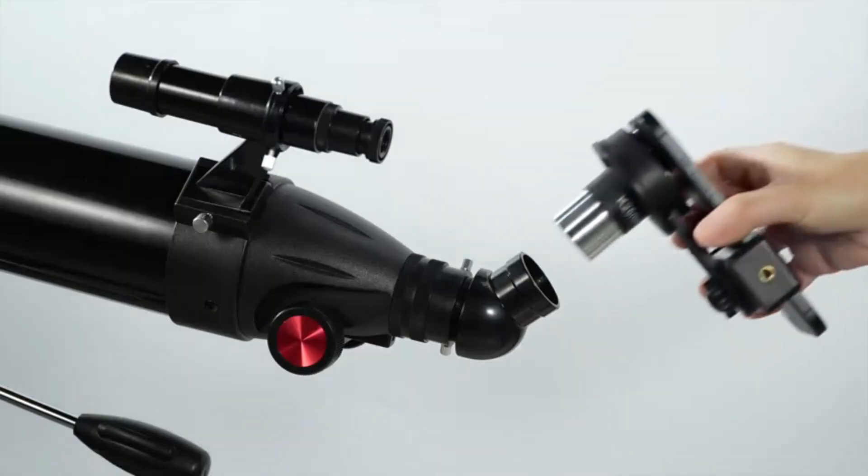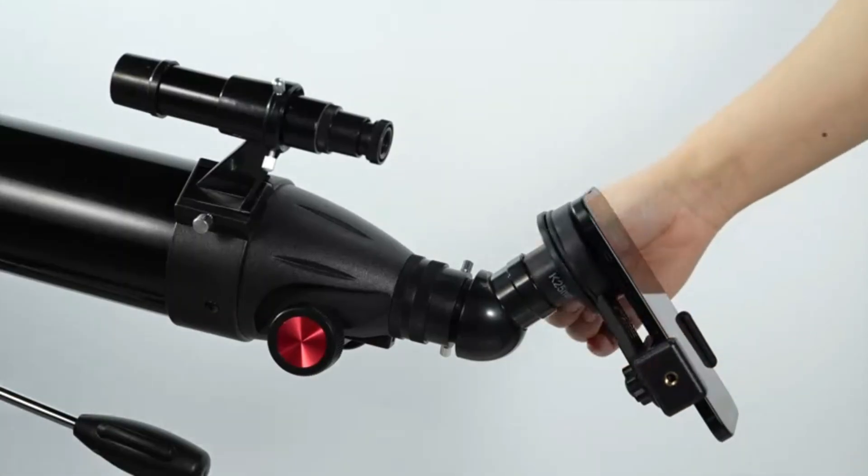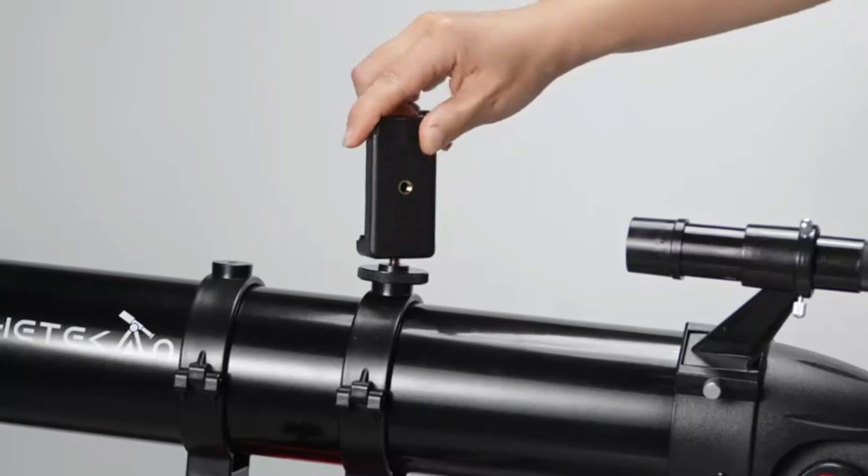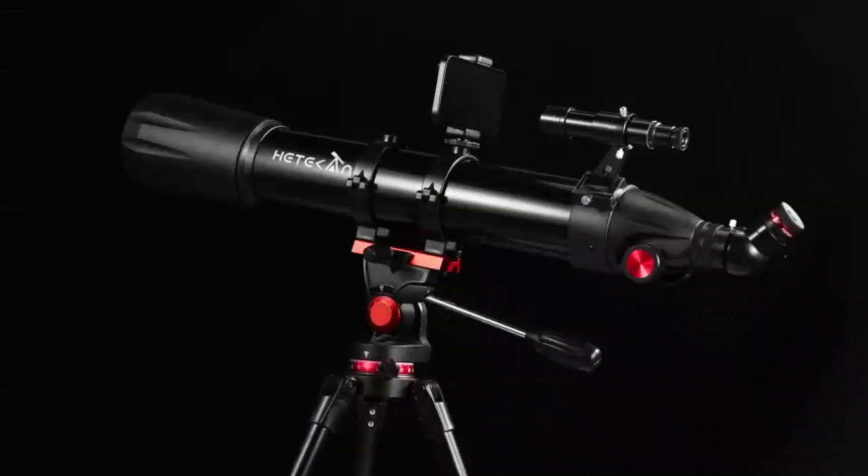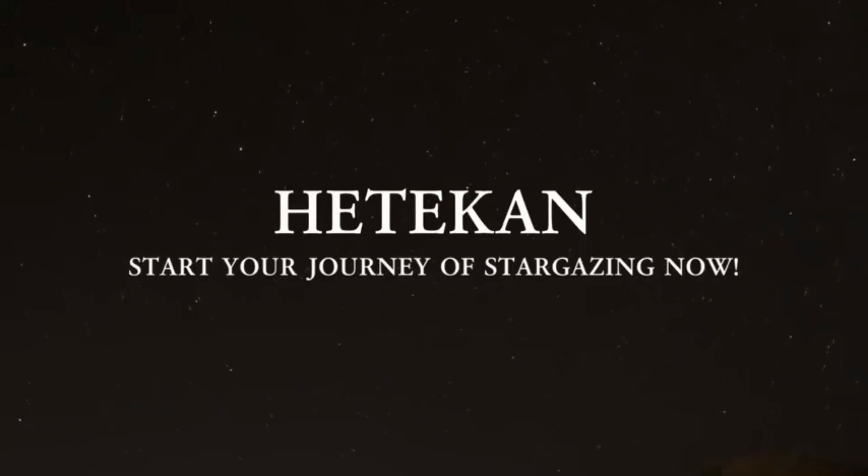Adjustable tripod, Telescope Astronomical features a sturdy tripod. It offers 360 degrees horizontal and 180 degrees vertical movement for versatile viewing angles.